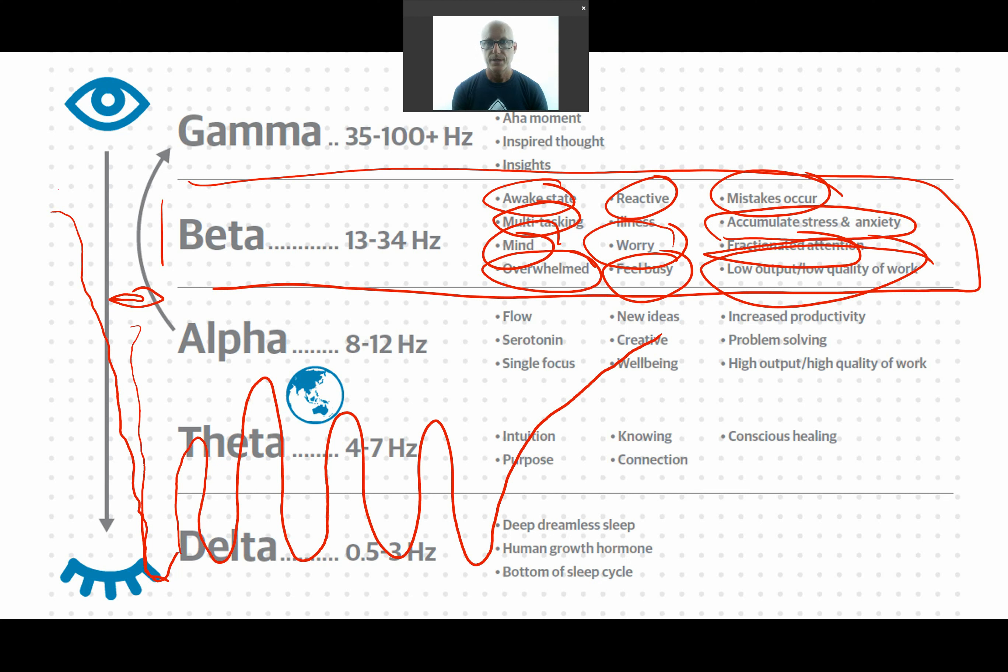Alpha is like a single focus. We tend to feel flow because serotonin's released, and because we're focused on a single task, it's the same feeling we get when we watch a movie or read a good book where we're just engrossed in that. We find early in the morning when there's no distractions or interruptions, or late in the evening after the distractions are finished, we can really drop into this state. It's great for high output, high quality work, increased productivity. We have a greater sense of well-being because serotonin's released.